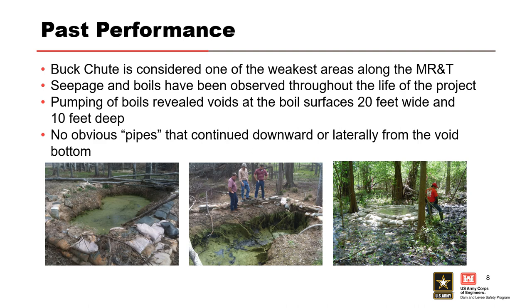Buck Chute is considered one of the weakest areas along the MRNT due to poor performance during past flood events. Seepage and sand boils have been noted throughout the life of the project. One boil in particular was pointed out by a landowner in early 2010 and is suspected to have formed during the 2008 flood event. Sandbags were placed around the boil in spring of 2010, but flow from the boils on the landside increased during the summer of that same year. Several boils were pumped in early 2011, with pumping revealing voids at the boil surfaces up to 20 feet wide and 10 feet deep. None of these voids contained pipes that continued downward or laterally from the void bottom, and the sides and bottom of the voids appeared to be top stratum fine grain material. Nevertheless, Buck Chute is known to be an area where seepage and boil activity are present whenever the river rises.